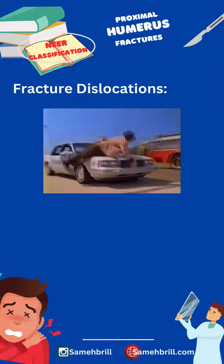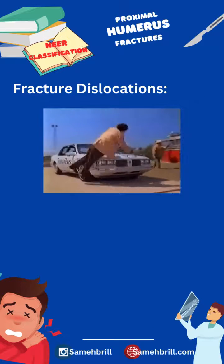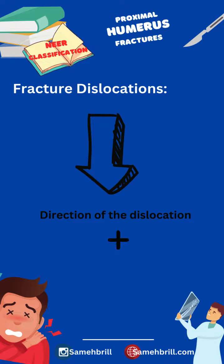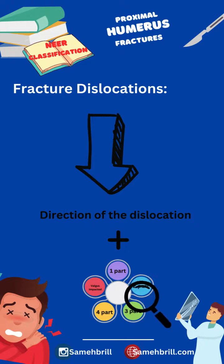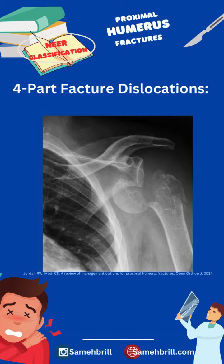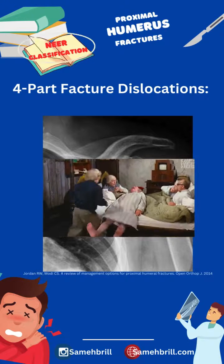Now let's dive into Neer fracture dislocations. Injuries are classified by the direction of the dislocation and whether they are two-part, three-part, or four-part fractures. In three-part fracture dislocation, there is some soft-tissue attachment to the head with blood flow, while in four-part fracture dislocation, the head is devoid of soft-tissue and blood flow.